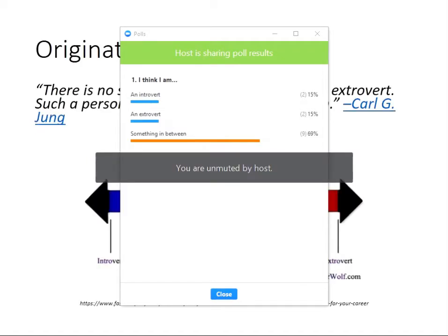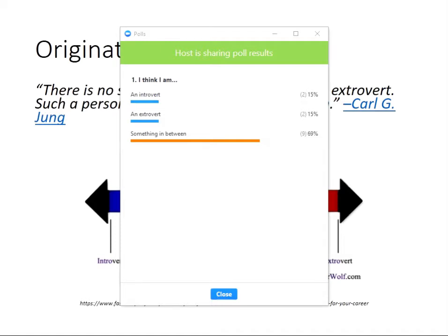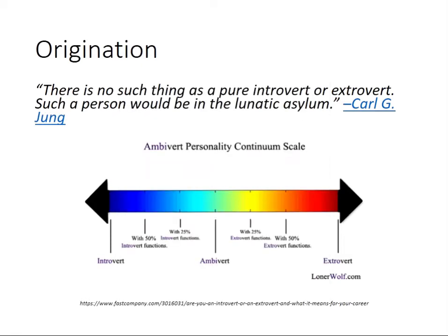The terms introvert and extrovert — originally spelled 'extravert' with an A — were popularized by Carl Jung in the early 20th century. Unfortunately their meanings got confused over time and we started thinking that everyone belongs to one camp or the other. But Carl's point was that these are very extreme ends of the scale, which means that most of us fall somewhere in the middle, as we can see from our poll results.